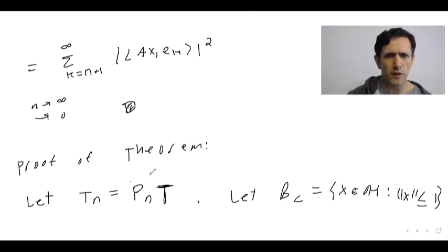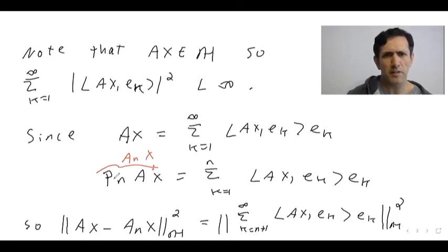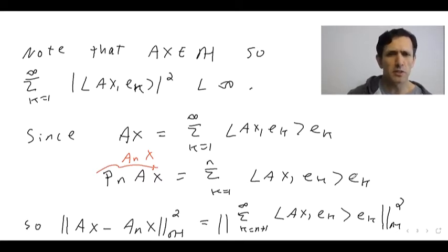There's a finite number of J's, so absolutely no problem doing this. And of course, TN is finite rank—it's obvious. The range of this operator is a subspace of just the span of the EK's for K equals one to N, and that's finite dimensional. So certainly TN is finite rank.